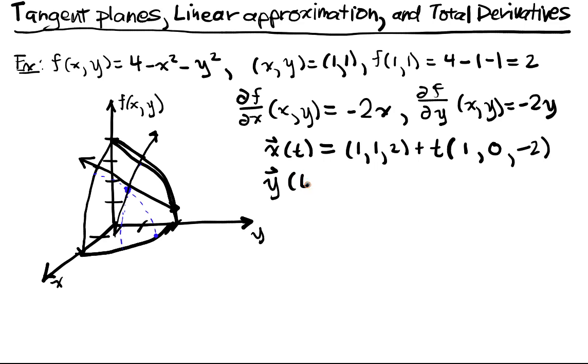Similarly, the line where y is changing is equal to (1, 1, 2) plus t of (0, 1, negative 2). Well these are two lines, and they live in exactly one plane together. There's one plane that they form. And this plane sits right at that point and contains both those lines.